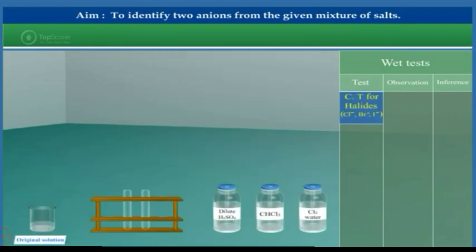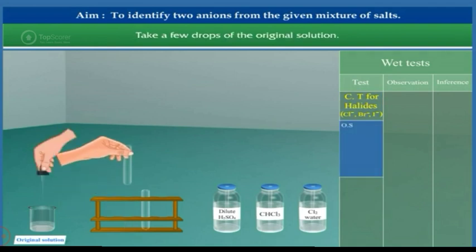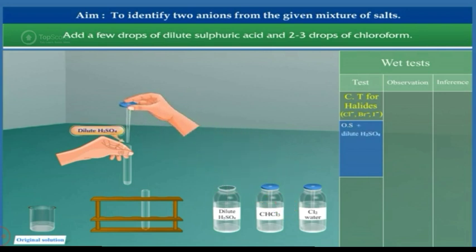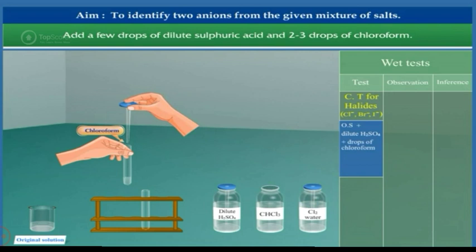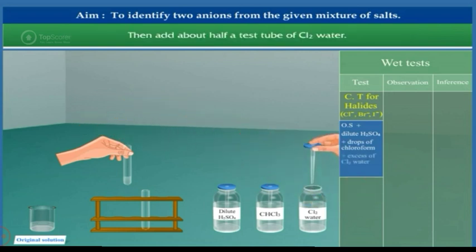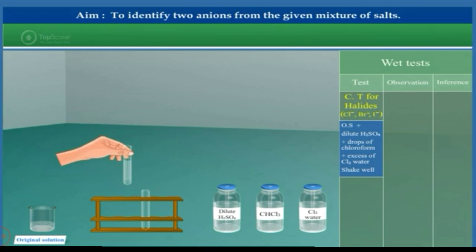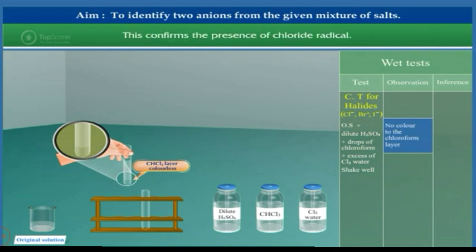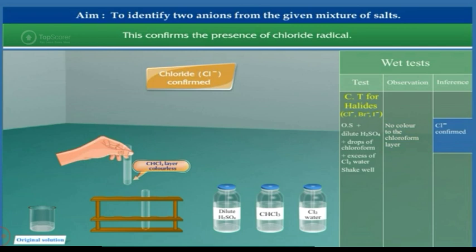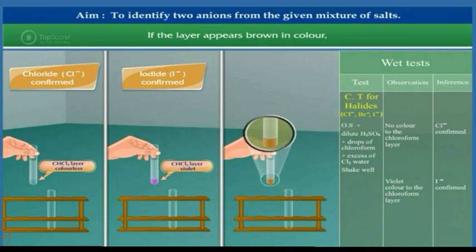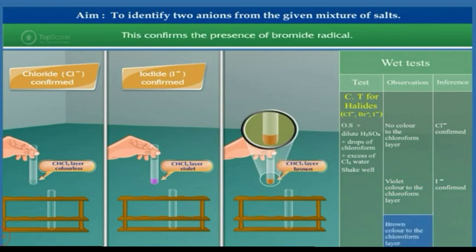Confirmatory test for halides: Take a few drops of the original solution. Add a few drops of dilute sulphuric acid and 2-3 drops of chloroform. Then add about half a test tube of chlorine water. Shake the test tube well and observe the lower chloroform layer. If the layer appears colorless, this confirms chloride radical. If the layer appears violet, this confirms iodide radical. If the layer appears brown, this confirms bromide radical.